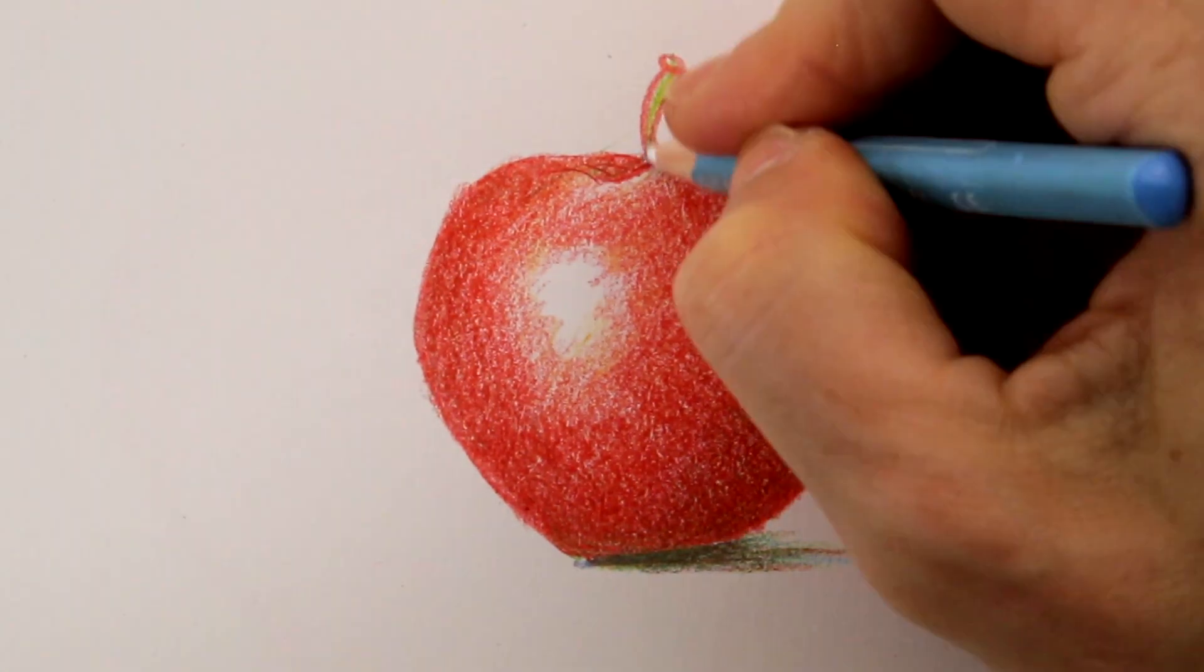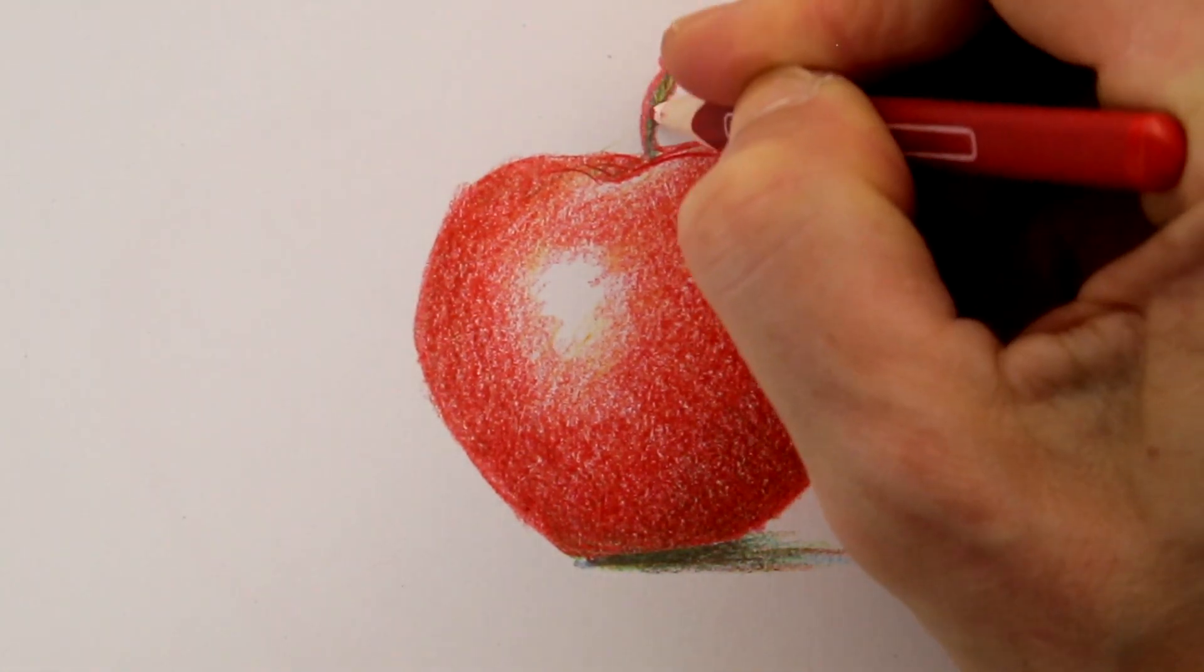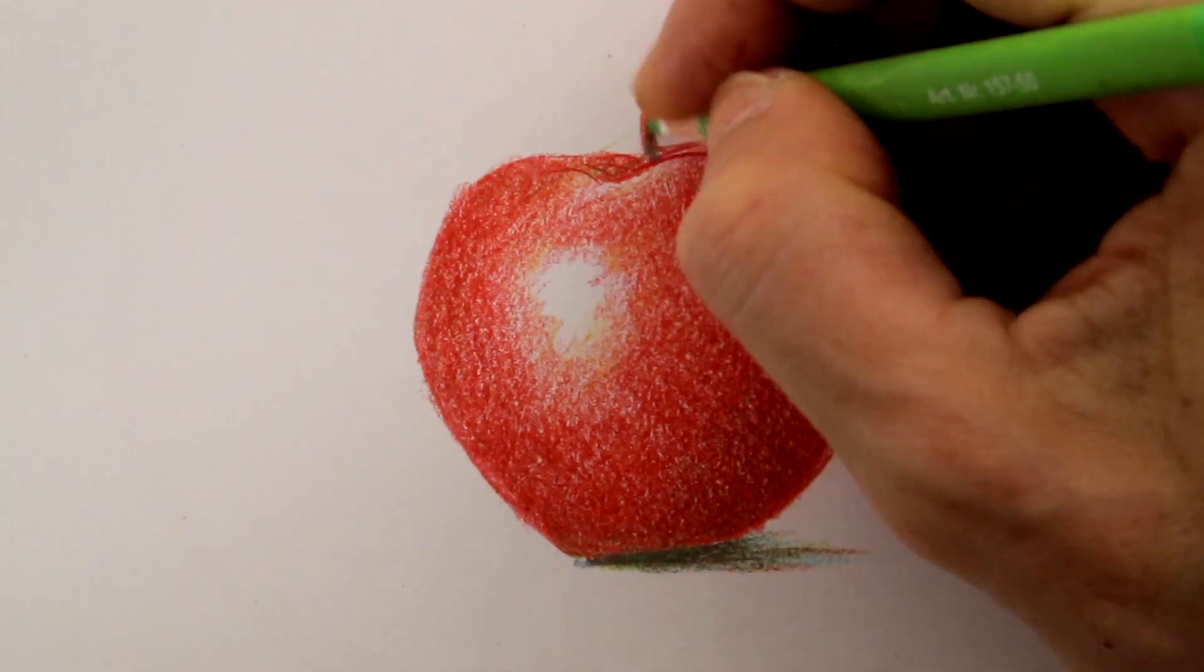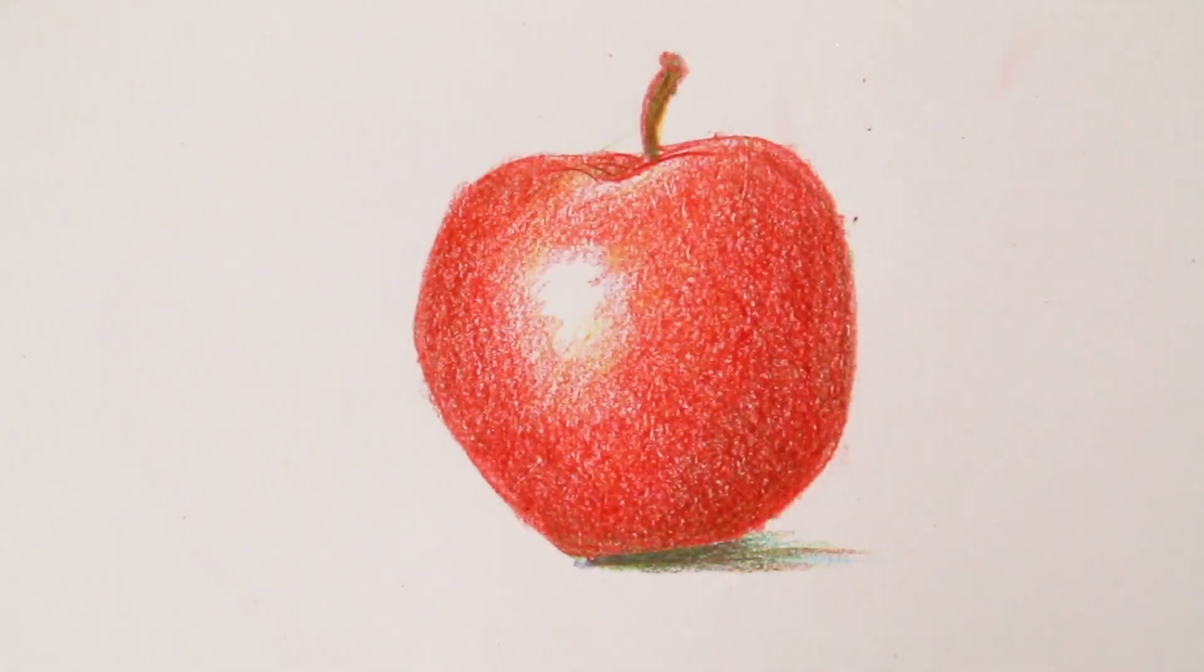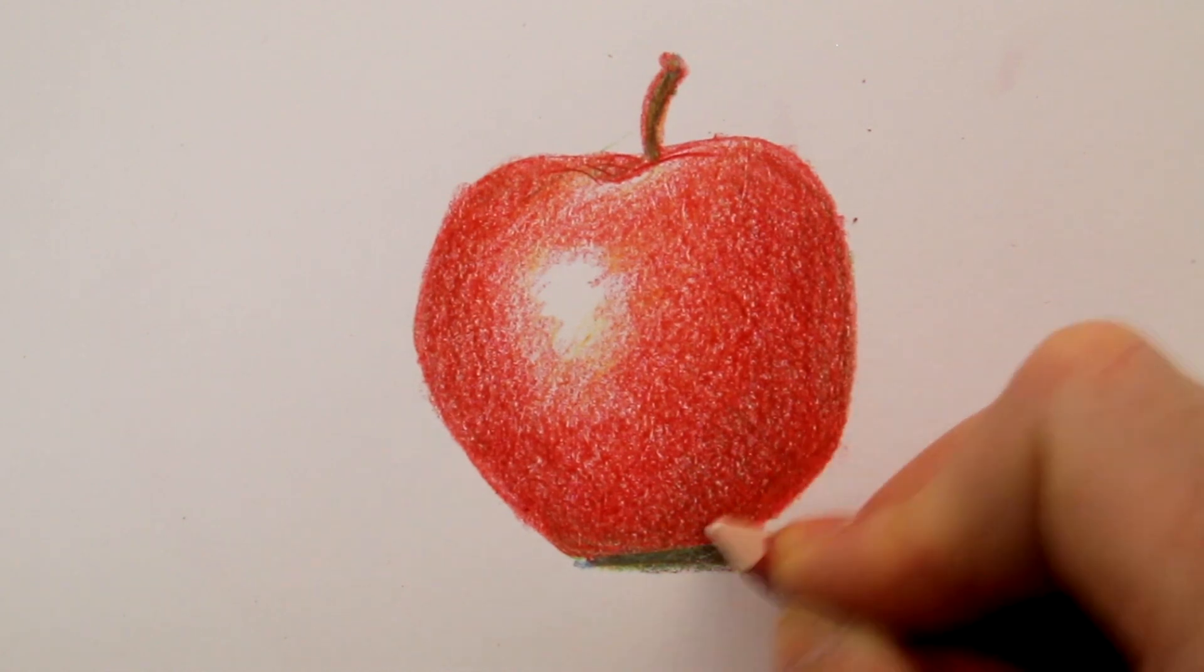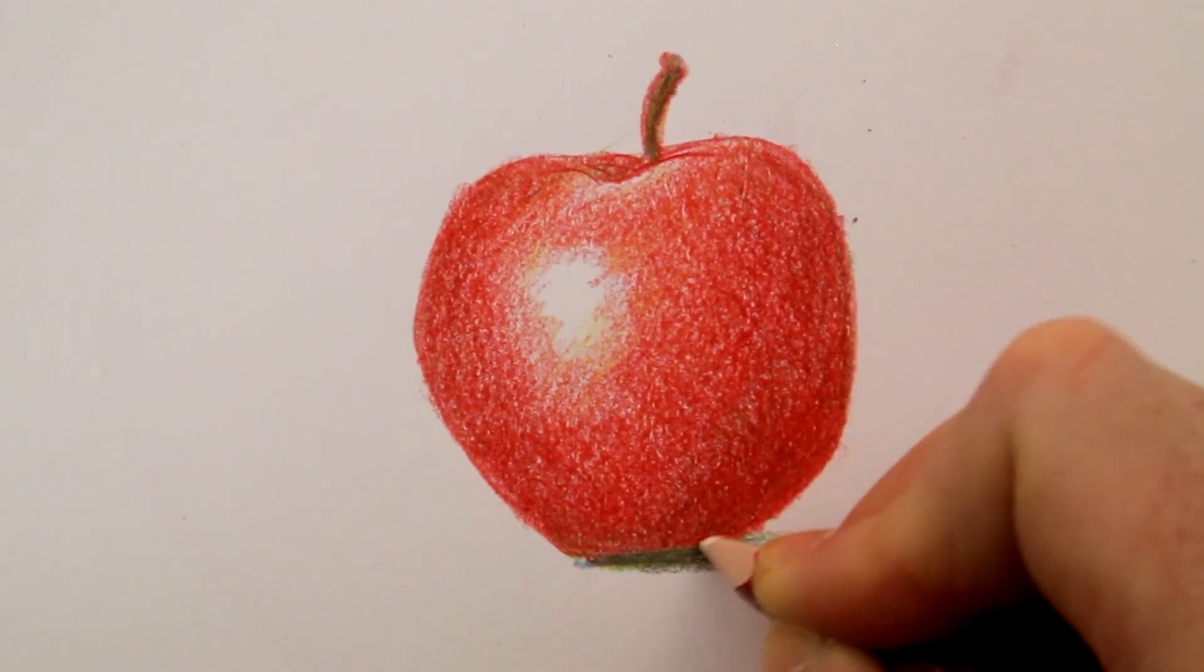You can fiddle around with the primary and secondary colors to create a brown color for the stock. Like I am doing here, without much success. But there's likely a nice brown pencil in your color pencil set, so why not use that?